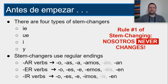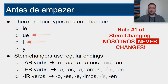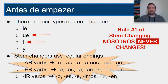A couple things to go over before we begin. A reminder: there are four types of stem changers — IE, UE, I, and Y. Last chapter we went over the IE stem changers, and this chapter we're going to be going over the UE and the I changers. I'd also like to remind you that all stem changers still use regular endings.